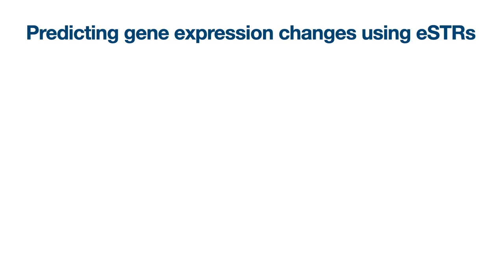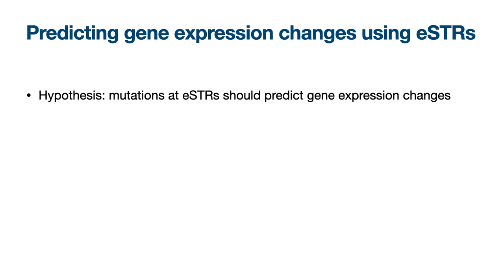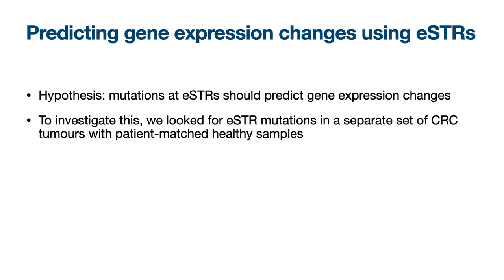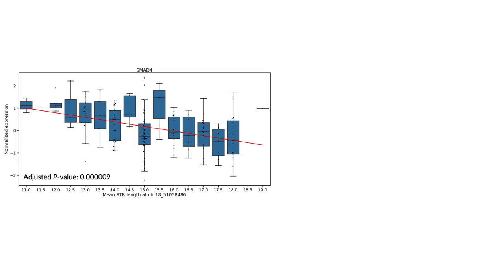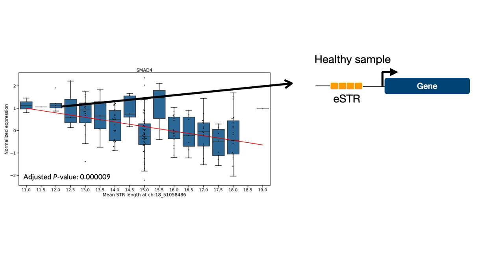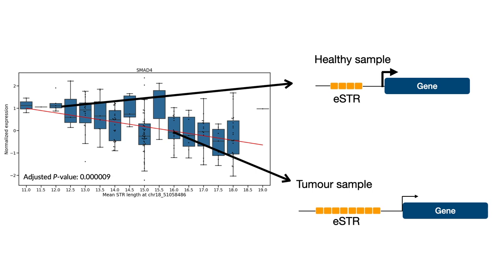Now that we have these ESTR associations, we wanted to see if we could use them to predict gene expression changes in a separate dataset. We looked for ESTR mutations in a separate set of colorectal cancer tumors from the Cancer Genome Atlas for which we also had patient-matched healthy samples available. Our hypothesis was that the ESTR associations we found previously should be able to predict gene expression changes in response to ESTR mutations. Going back to our SMAT4 example, if a patient's ESTR copy number has increased in the tumor sample compared to the healthy sample, the ESTR association would predict that SMAT4 expression should be lower in the tumor.